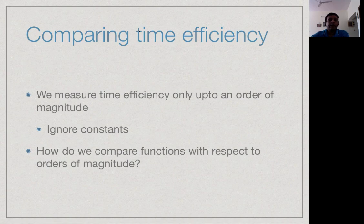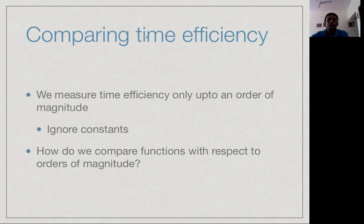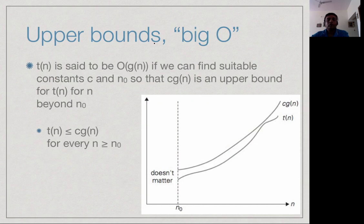We have said that we will measure the time efficiency of algorithms only up to an order of magnitude. We will express the running time as a function t of n of the input size n, but we will ignore constants — we will only say that t of n is proportional to n square, n log n, or 2 to the n. The next step is to have an effective way of comparing these running times across algorithms.